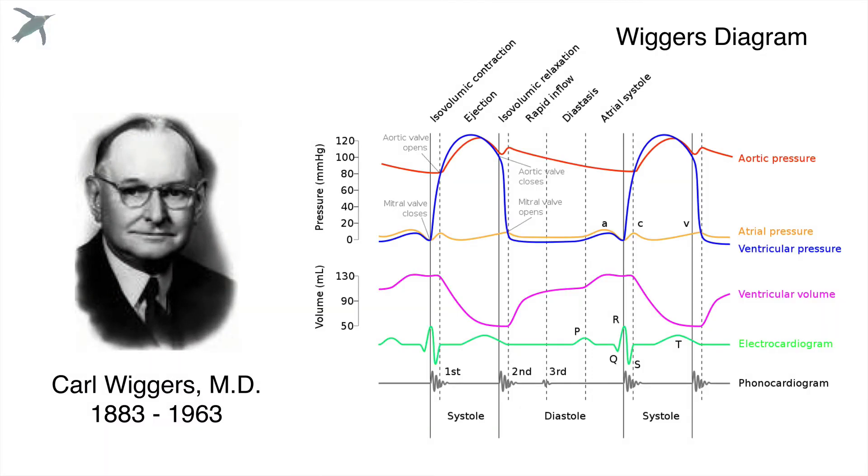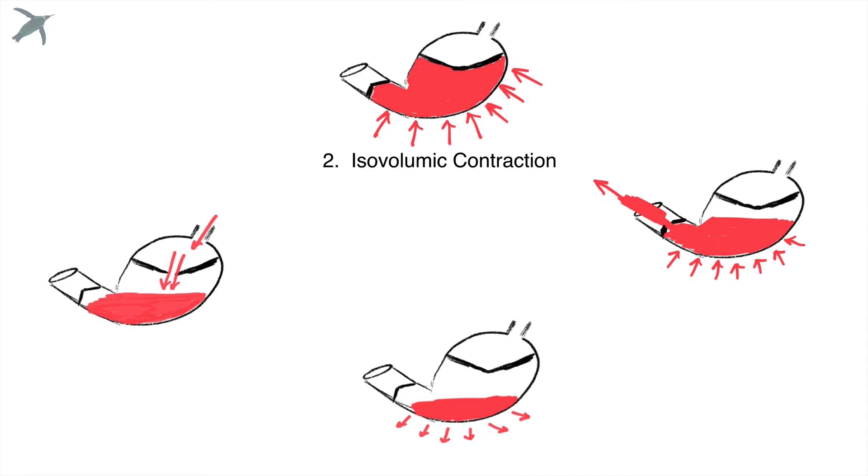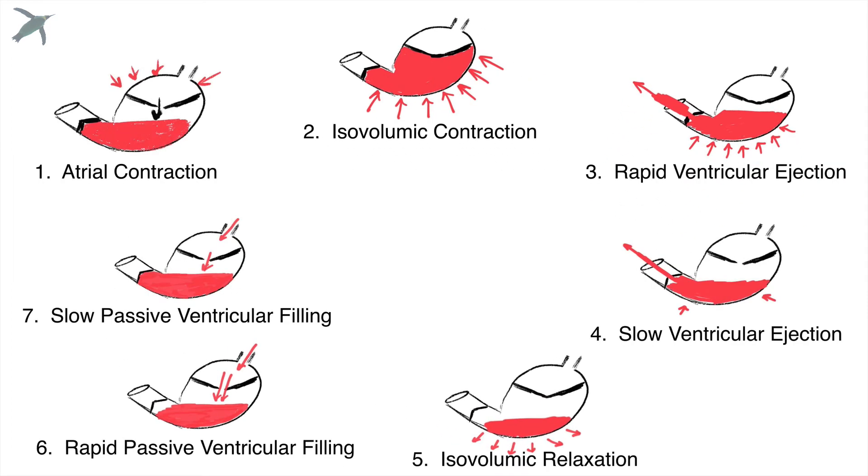Now, let's look at this beast, the Wiggers diagram. I want to emphasize to you that by understanding the pressure volume curve and those four basic phases, we're going to be able to figure this out. So we've got these four phases. Now, with the Wiggers, we've got to add a few more. Do not panic. We've got to add atrial contraction because we're going to look at the whole ECG.